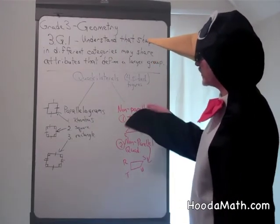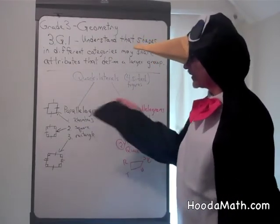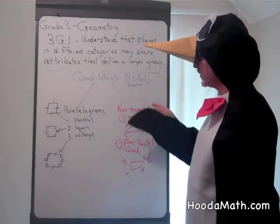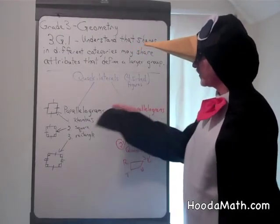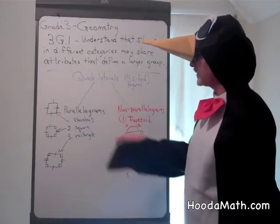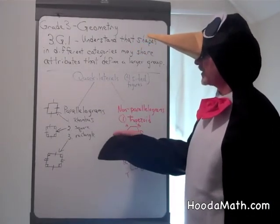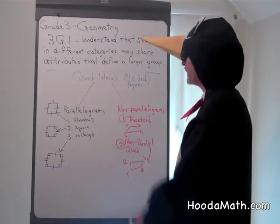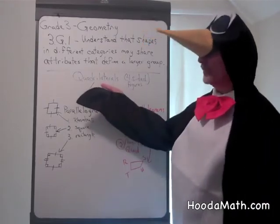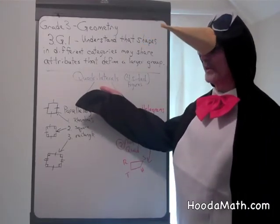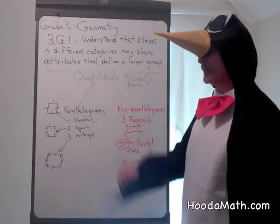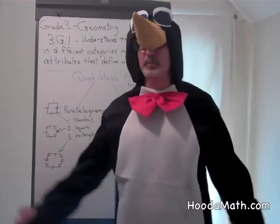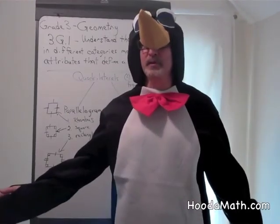So you can see there are subcategories — nonparallel quadrilaterals and parallelograms — that both have one thing in common: they are both quadrilaterals, four-sided figures. I hope this cleared up some things for you.